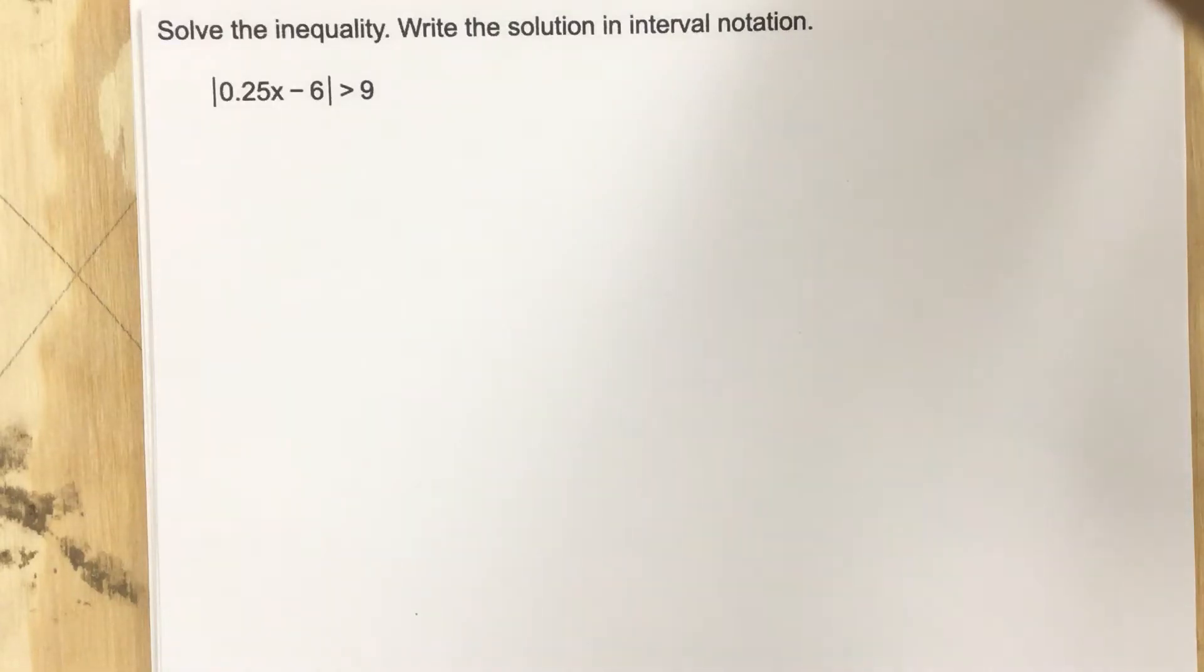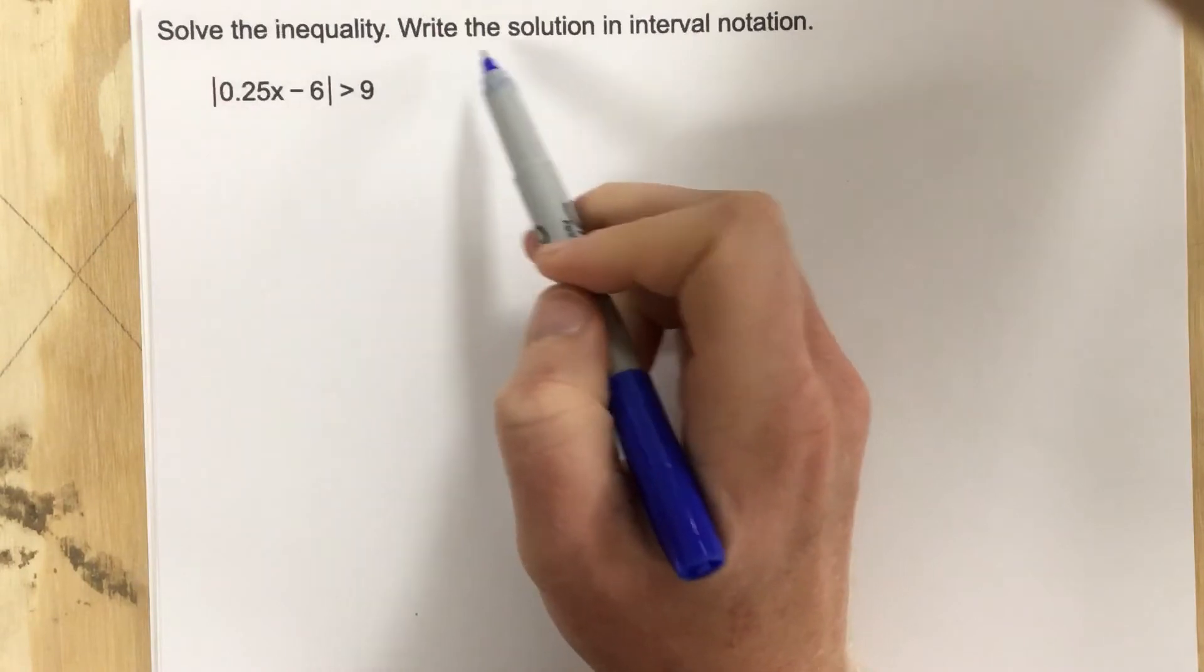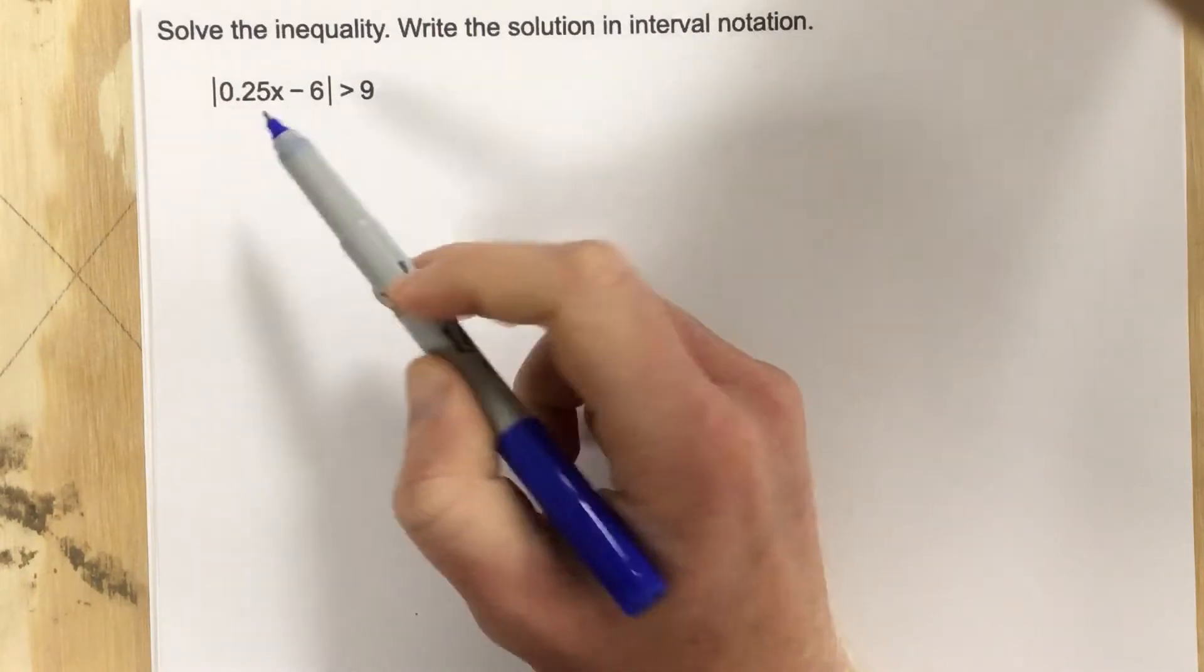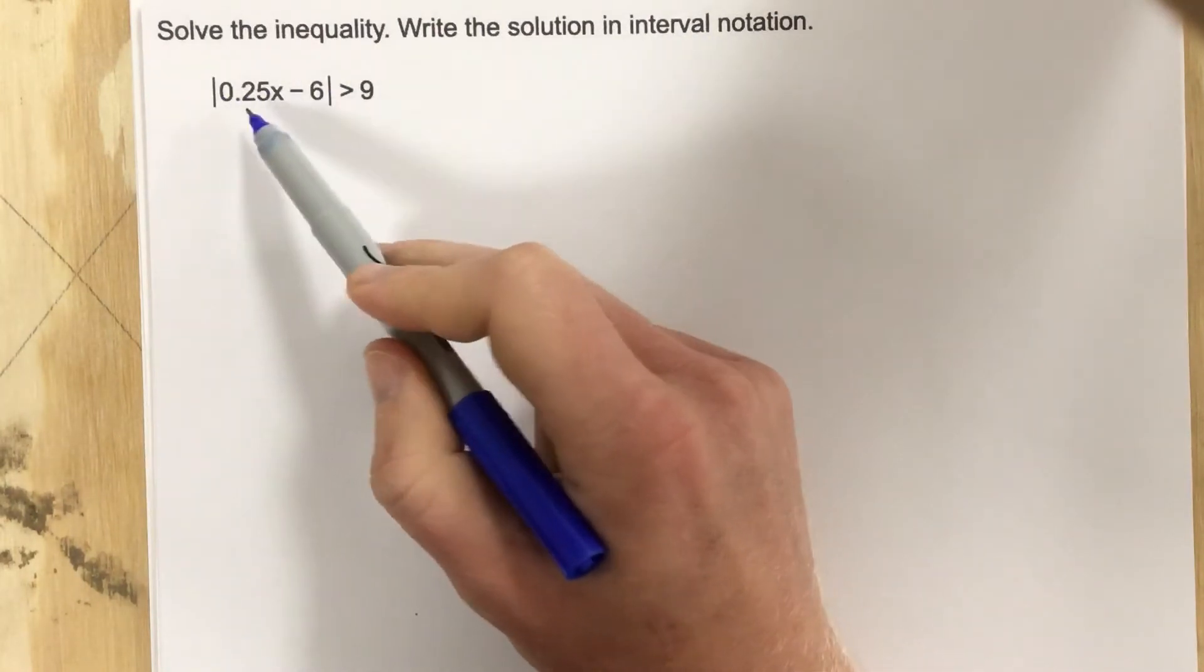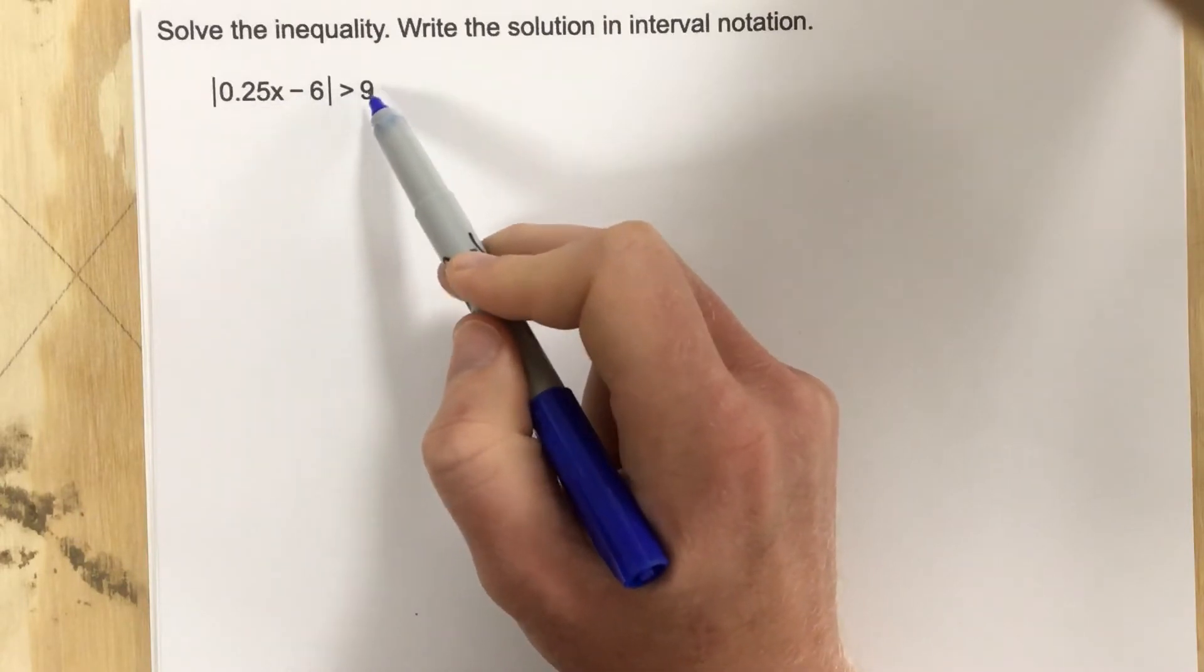This is problem number two for assessment number seven. In this problem it says solve the inequality, write the solution in interval notation, and it gives you the absolute value of 0.25x minus 6 is greater than 9.